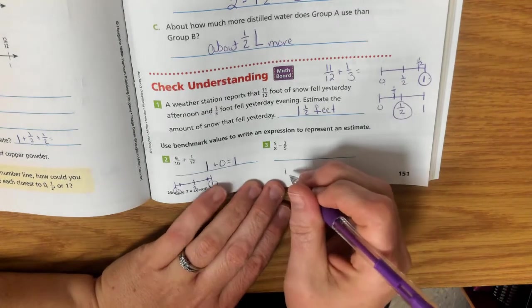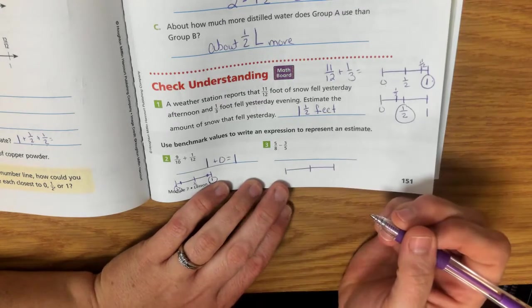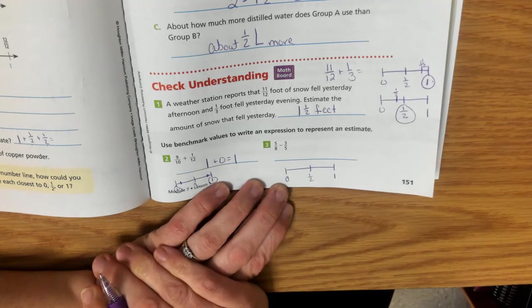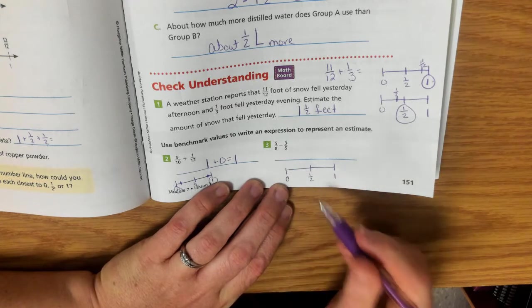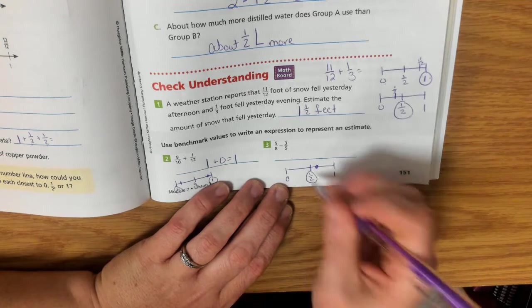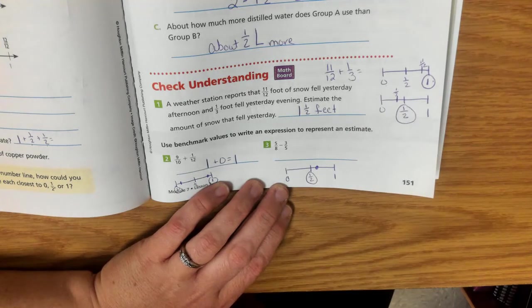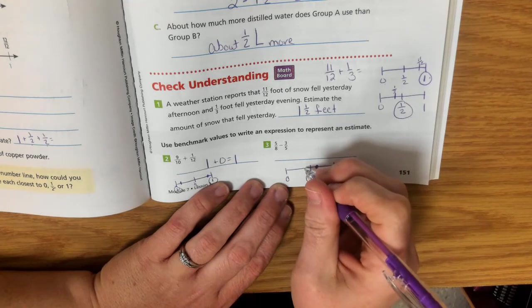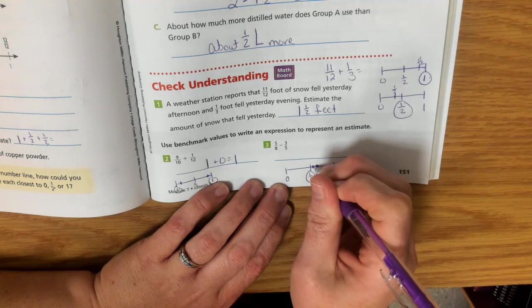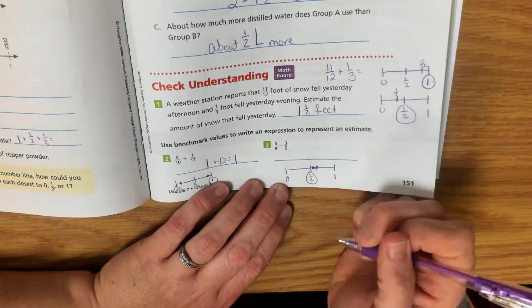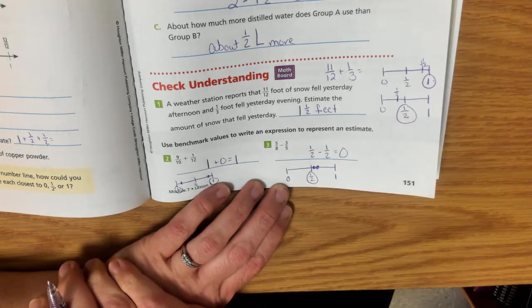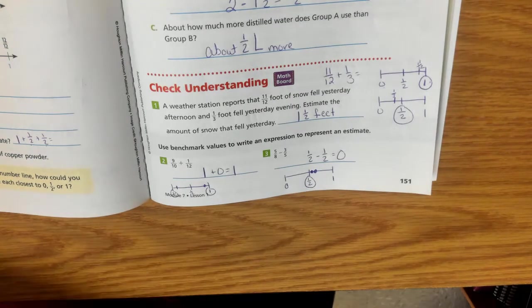5 eighths minus 3 fifths. So we've got our 0, our half, and our whole. 5 eighths. We know that 4 eighths is 1 half. So 5 eighths is a little bit more than 1 half, but not a lot more. So that's closer to 1 half. So 3 fifths would be over, well, 2 and a half. So it would be actually just a little bit smaller than 5 eighths. So that's 2 halves. So this would be 1 half minus 1 half. So this is going to be about 0 if we're rounding.